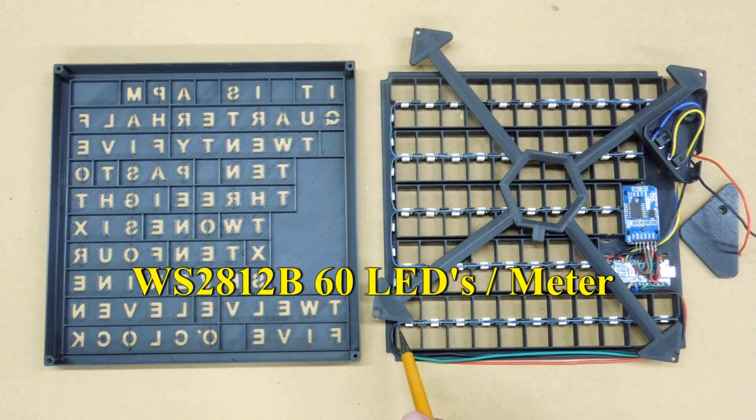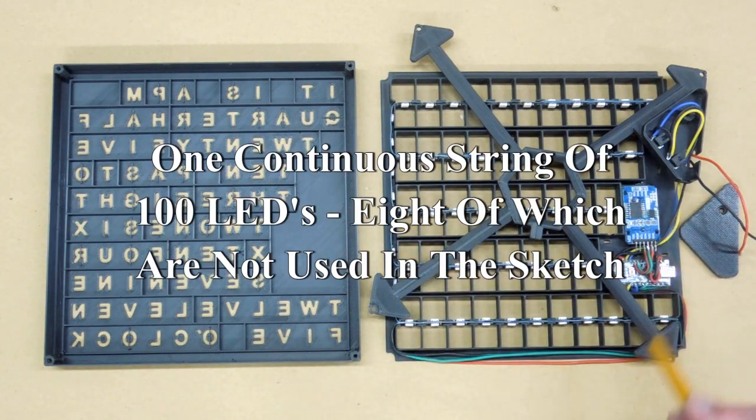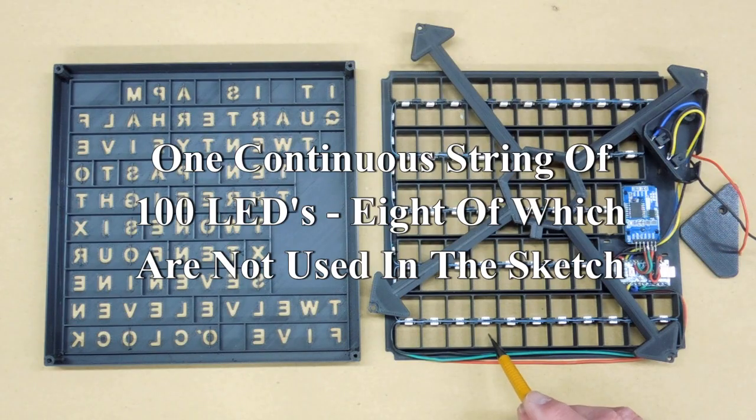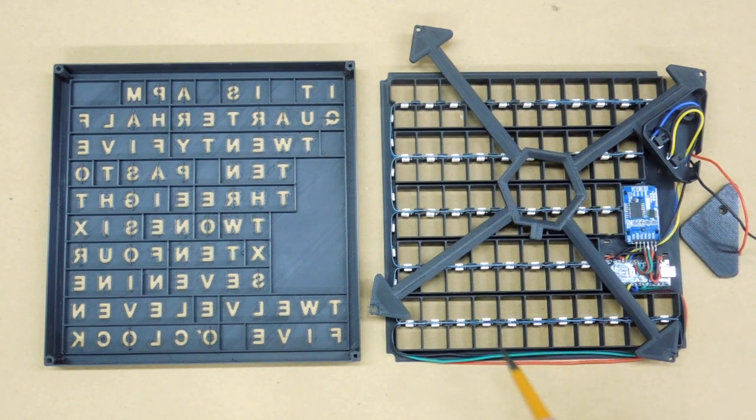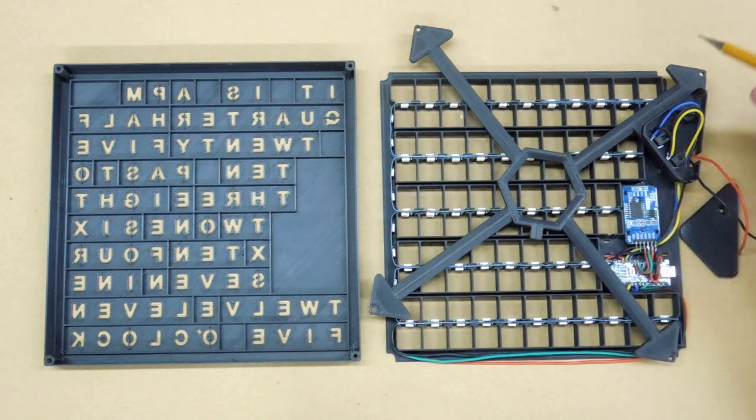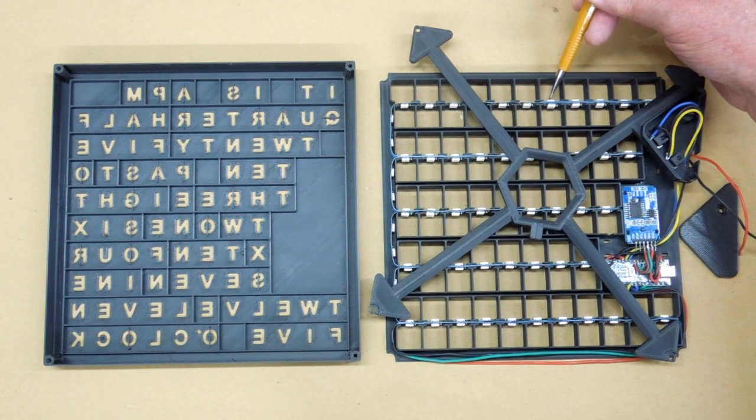The LEDs start here, come across, loop around, go back and forth. One LED illuminates one of these little boxes and it goes all the way back and forth until you get to here and then the LEDs stop here.